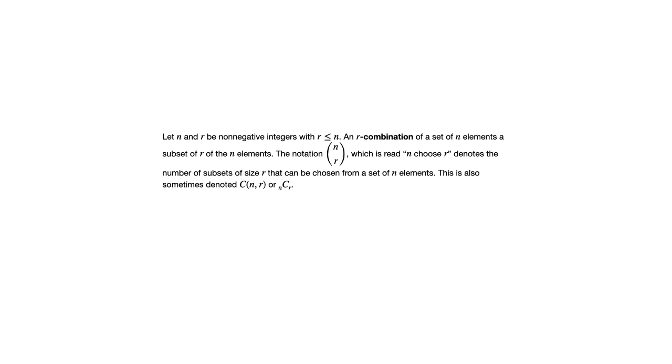If we let n and r be non-negative integers with r less than or equal to n, an r combination of a set of n elements is a subset of r of the n elements. The notation, which we read as n choose r, describes the number of subsets of size r that can be chosen from a set of n elements.